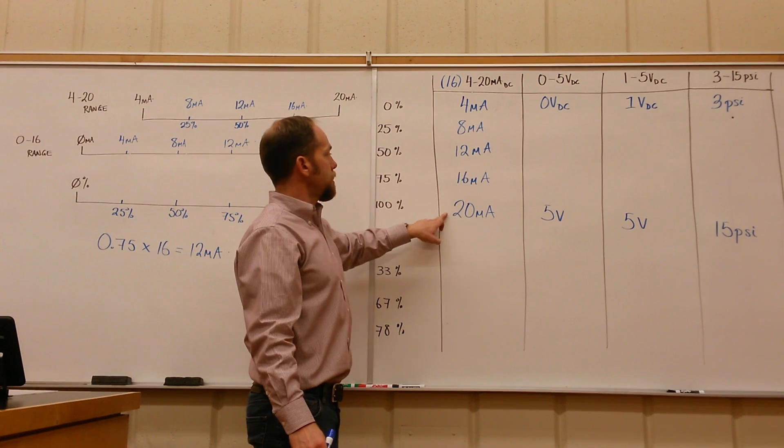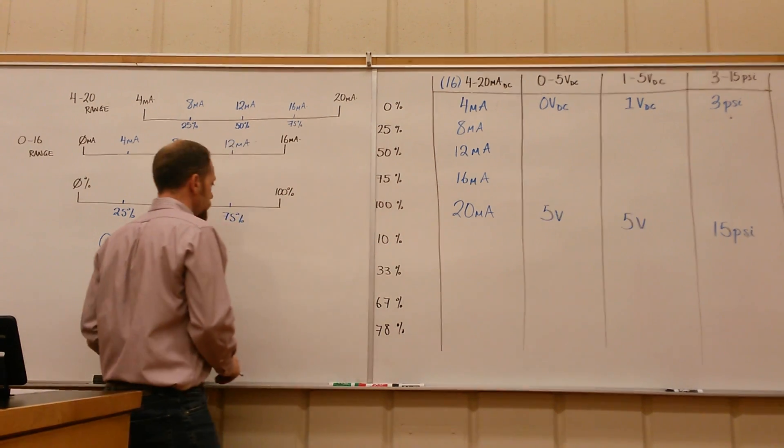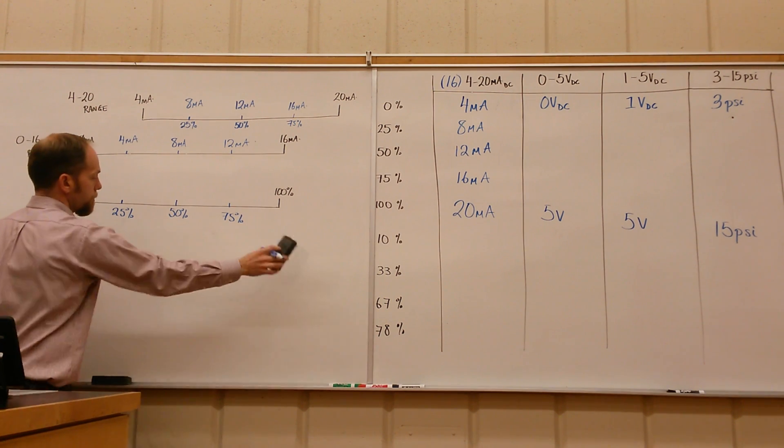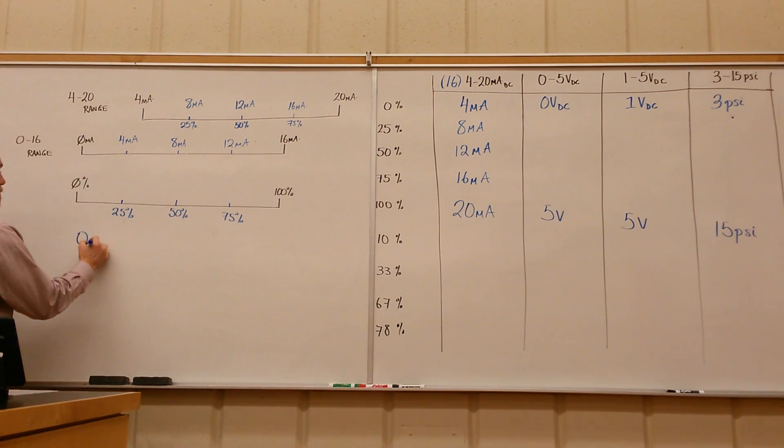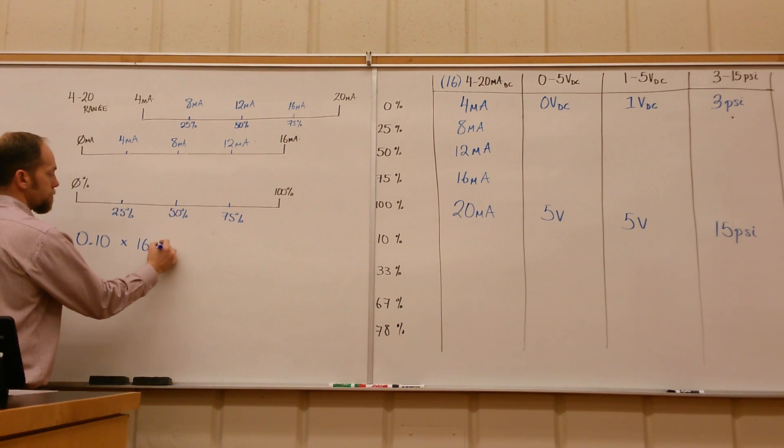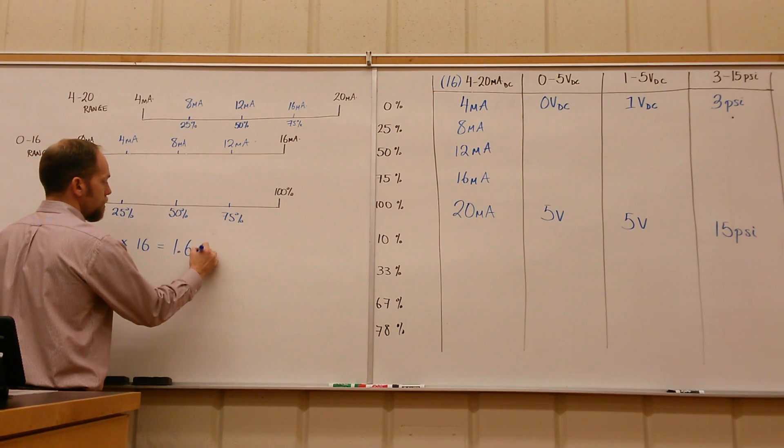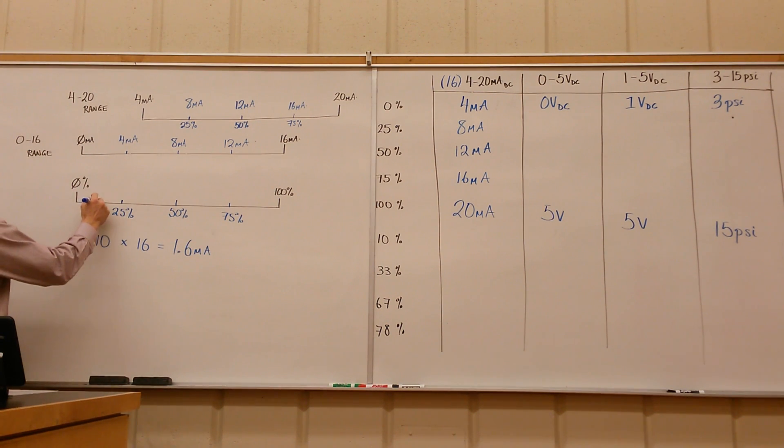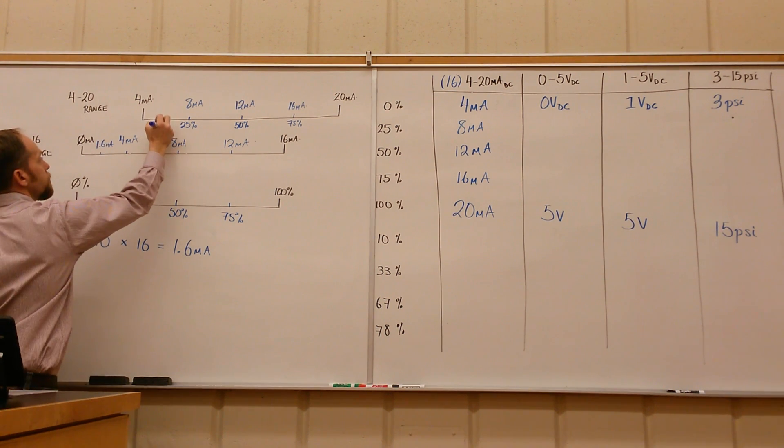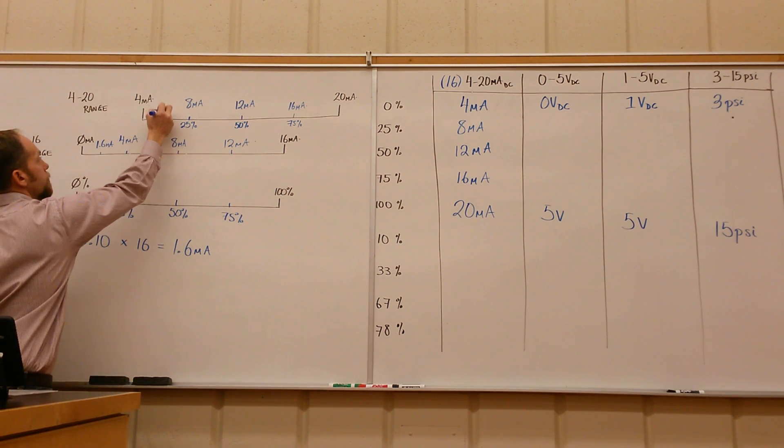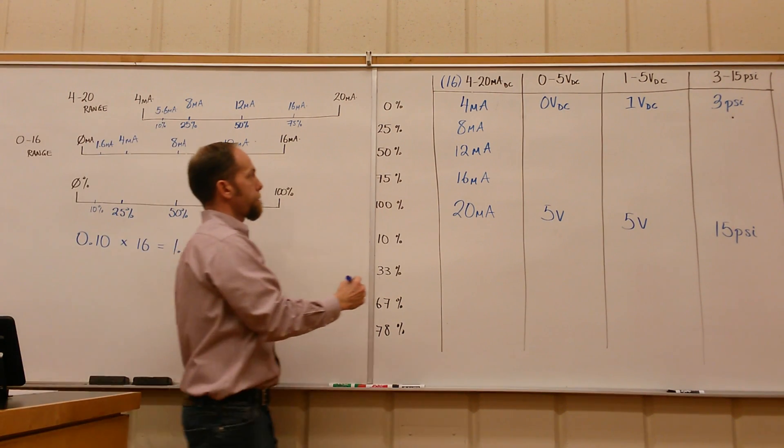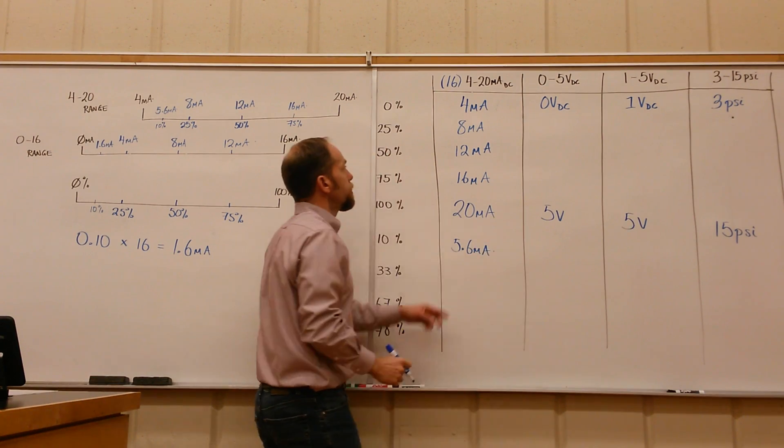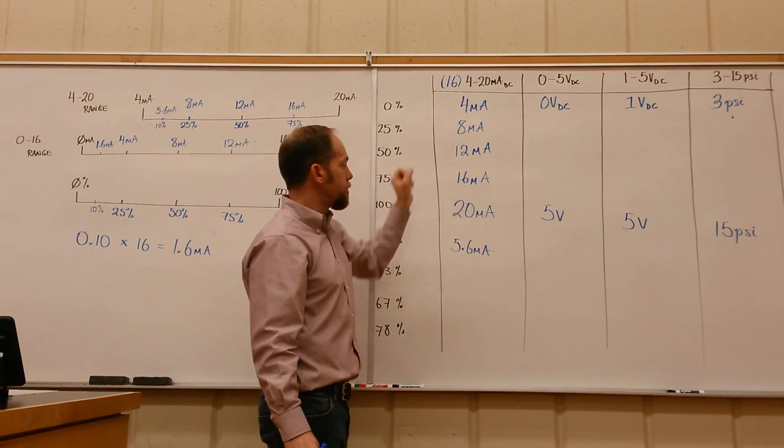So we've got 4, 8, 12, 16, and 20 milliamps. Following that, if we wanted to find the 10%, just take 10% of the 0 to 16 range, and that gives you 1.6 milliamps. When we take that range and move it up by 4, we've got to add 4 to this value. So 10% ends up being 5.6 milliamps, which looks good because we're between the 4 and the 8, between the 0 and the 25%.